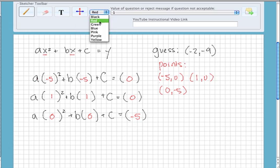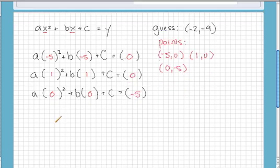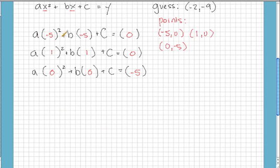Let's go ahead and simplify these equations now. And we will get something that will look a lot simpler than this. So if we simplify negative 5 squared, that becomes 25 times a minus 5 times b plus c is equal to 0.